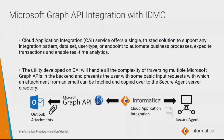Next, we'll be talking about Microsoft Graph API integration with IDMC. Cloud Application Integration, which is a part of IDMC as a microservice, offers a single trusted solution and can support any integration pattern endpoint to automate any business process and perform real-time analytics. The application developed on CAI handles all the complexity in the backend, presents the user with basic input options, traverses multiple Microsoft Graph APIs, processes the email to fetch the attachment, and copies it to the secure agent server location.